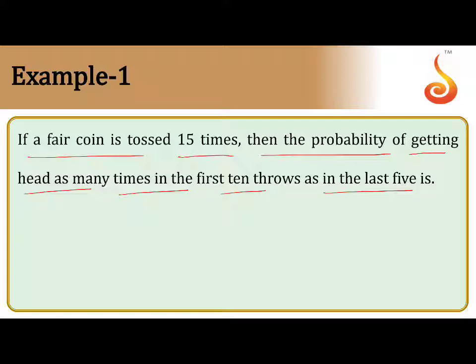That means first 10 throws, how many heads each time and last 5 also, the number of heads will be same. Suppose first 10 throws zero heads comes, last 5 throws zero heads comes. Like that, you can take the combinations.